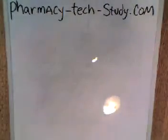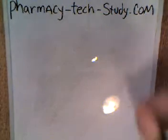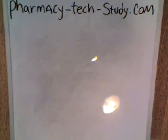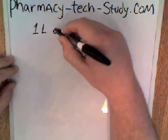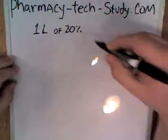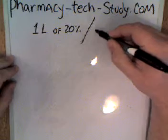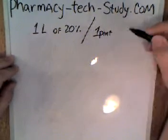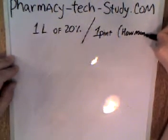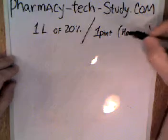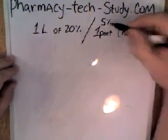I got a question on the website that says, how do you find the answer to question number nine on quiz four? And that question says you have been asked to dilute and repackage one liter of a 20% solution into one pint bottles of 5% solution.